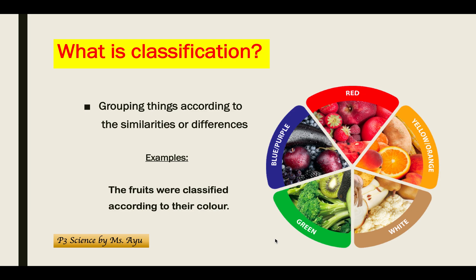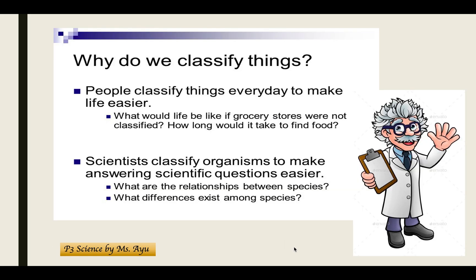These foods are classified according to their color. We have blue or purple, then red, then yellow or orange, white, and the last is green. For each group, they contain things that share that particular color.